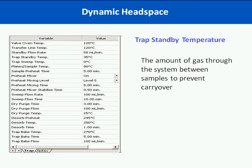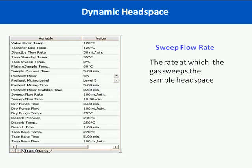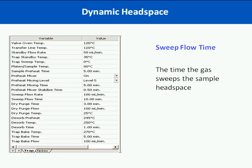The trap standby temperature is the temperature that the trap must reach before the next sample can begin — this assures that each sample is run under the same temperature and conditions. A good setting for the trap during standby is about 35 to 45 degrees C. The sweep volume is dependent on two variables: sweep flow rate and sweep flow time. The sensitivity of your analysis can then be controlled by the sweep volume. So if you're trying to increase the sensitivity, adjust both the sweep flow rate and the sweep flow time.